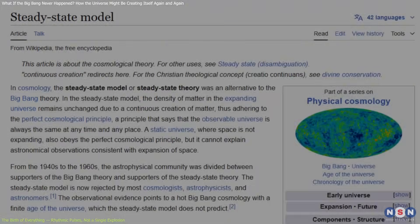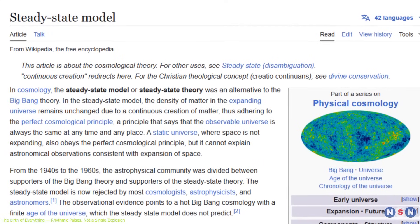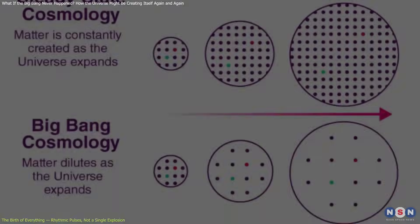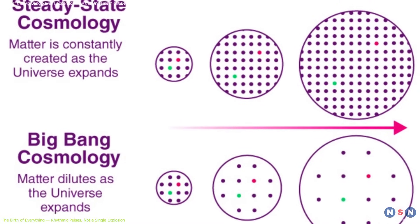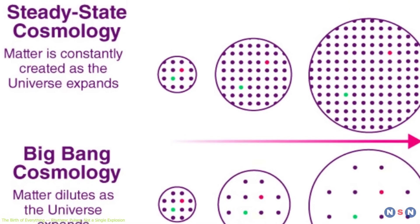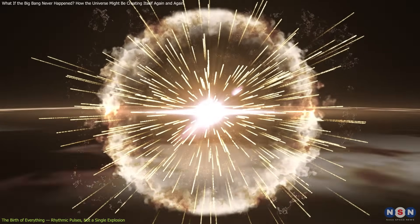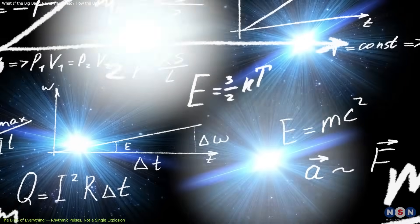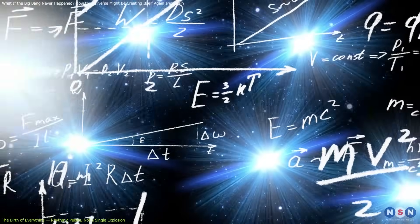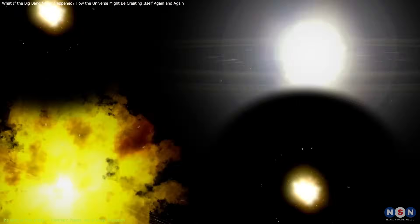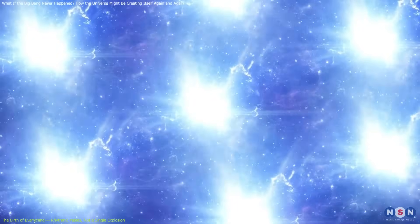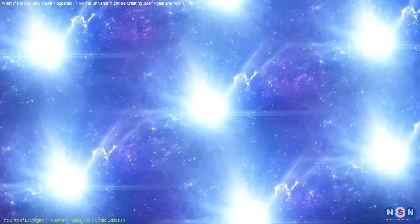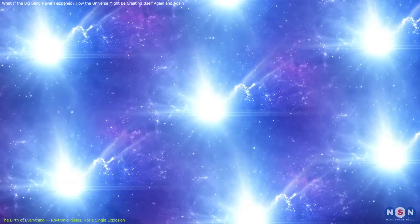What distinguishes Liu's theory is its adherence to established physics. Unlike past models such as Fred Hoyle's steady-state concept, which assumed ongoing matter creation and conflicted with conservation laws, this new idea remains grounded in energy balance. Each pulse injects material without violating fundamental principles. These bursts act across the entire cosmos simultaneously, influencing all regions at once.